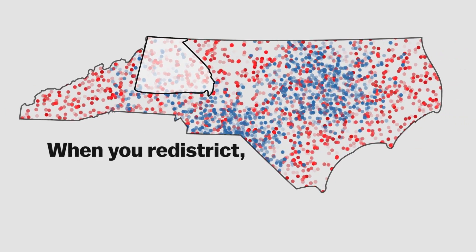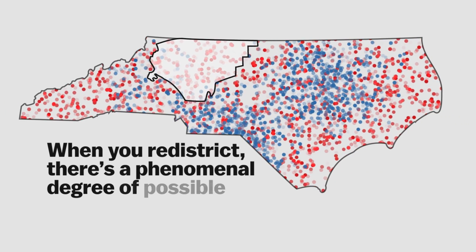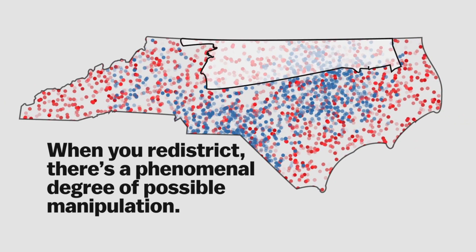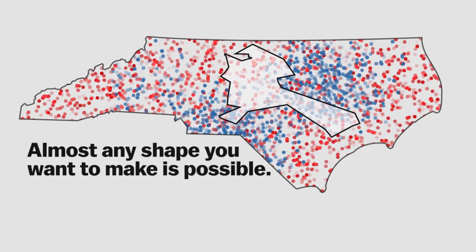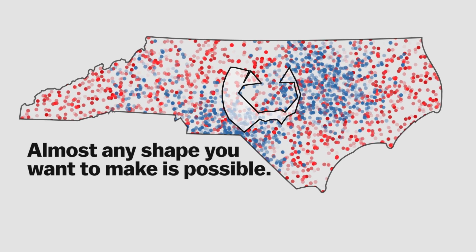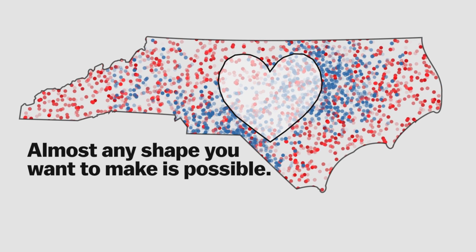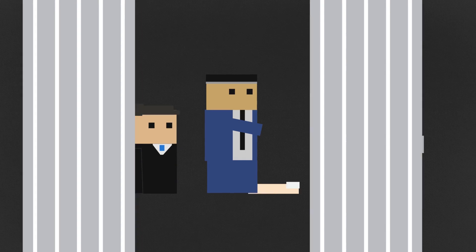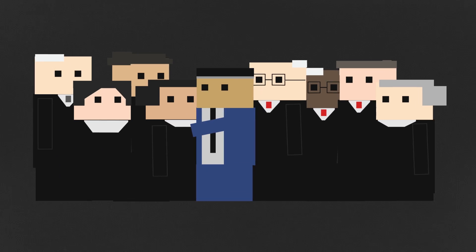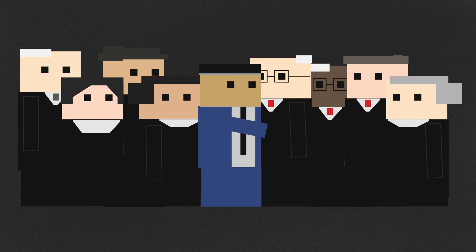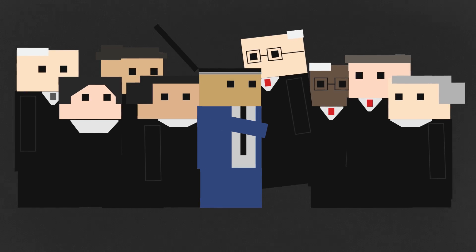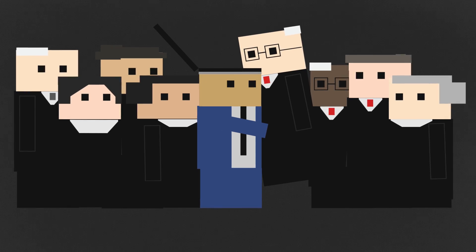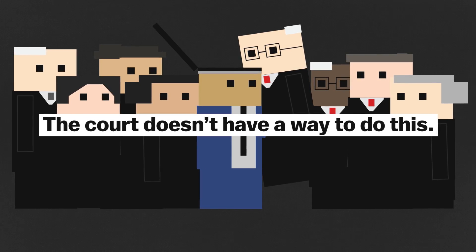So when you redistrict, there's a phenomenal degree of possible manipulation. Almost any shape you want to make is possible. That's led to a bunch of oddly shaped districts. The court wants to be able to determine the intent behind the district maps — basically, they want to read the mind of the map drawer. It doesn't have any way to do this.